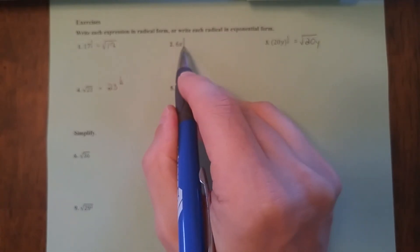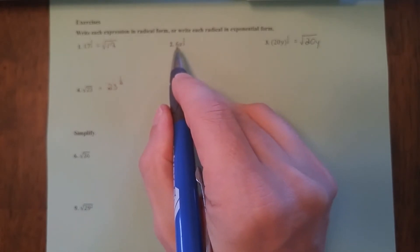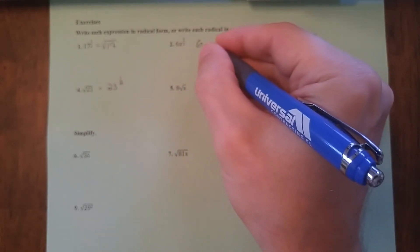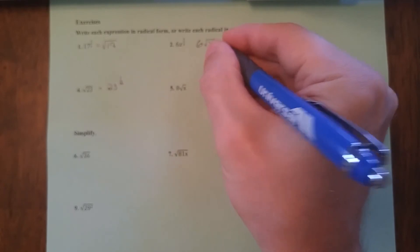Now right here, we have a one-half exponent, but the one-half exponent is on the x. It's not on the 6. It's just on the x. So what's going to happen is the 6 is going to be outside here and the x is going to be what goes under the radical.